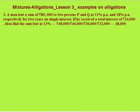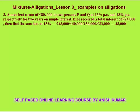The next question is similar — in this case, average interest is given. A man lent a total of 80,000 to two persons P and Q at 13 percent and 18 percent per annum for two years on simple interest. He received a total interest of 24,000. This is the average interest total. We need to find the sum lent at 13 percent. We can apply allegation because we have two rate percents and need the average rate of interest.